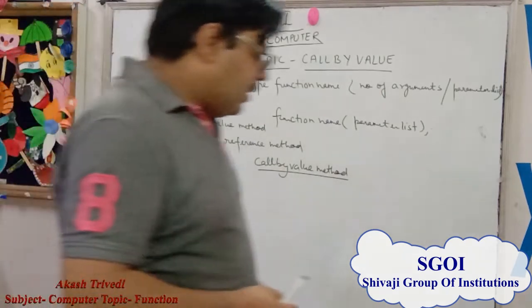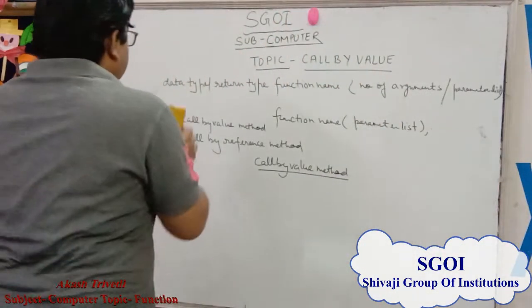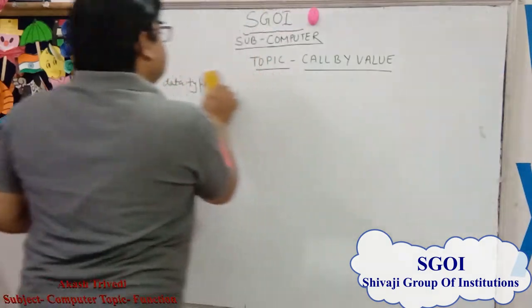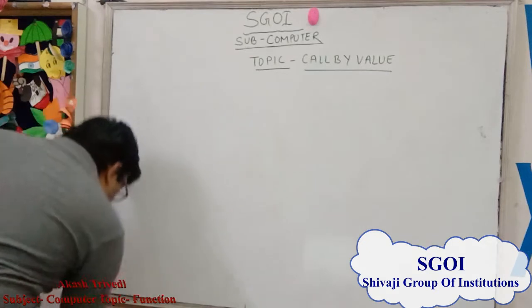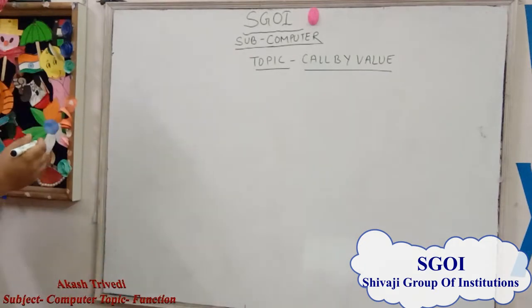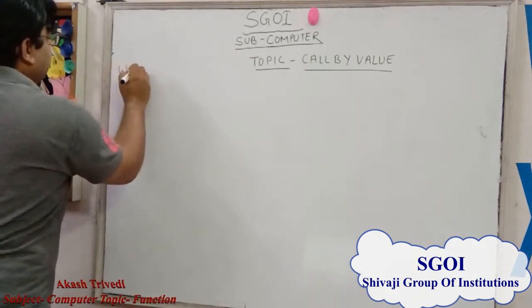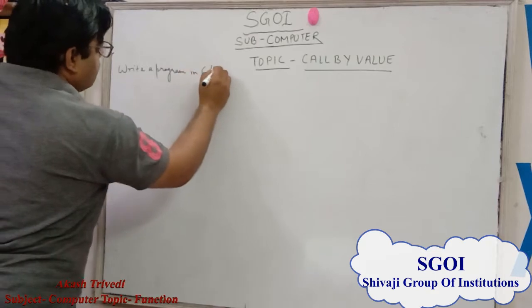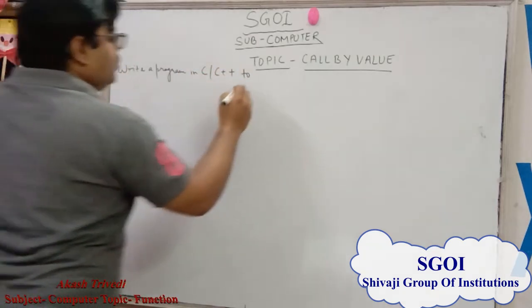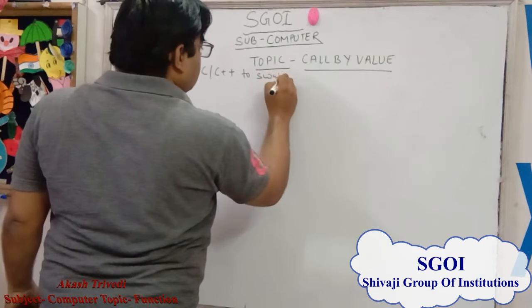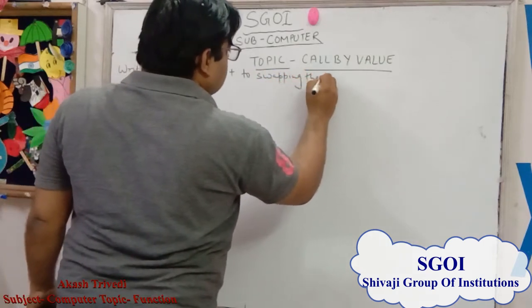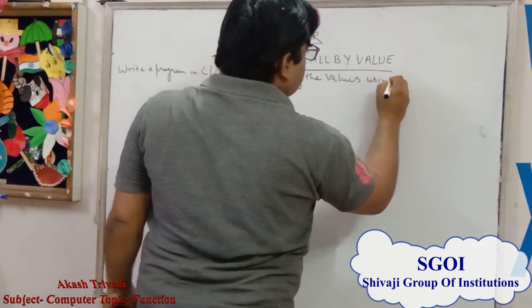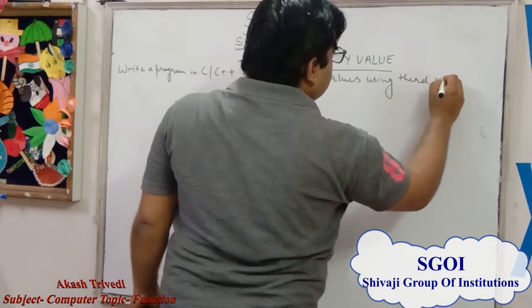Now we understand the call by value method with an example. Write a program in C or C++ to perform swapping of values using a third variable.